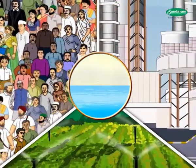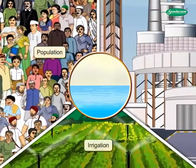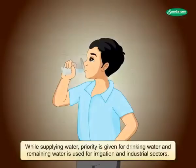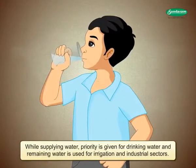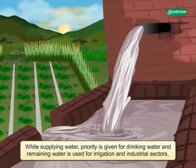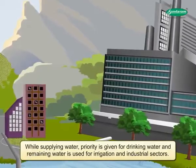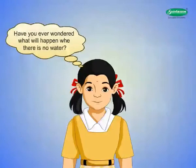Demand for water is continuously increasing due to increasing population, irrigation, and industrial growth. While supplying water, priority is given to drinking water, and the remaining water is used for irrigation and industrial sectors. Have you ever wondered what will happen when there is no water? Let us see the consequences of water scarcity.